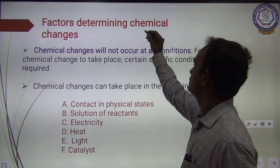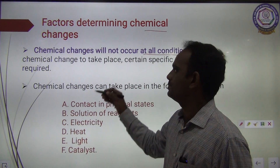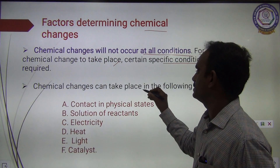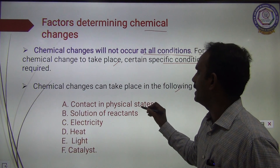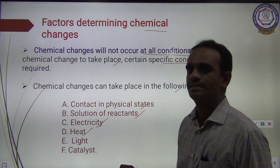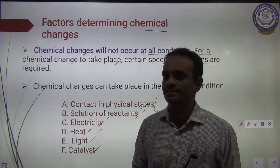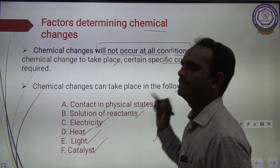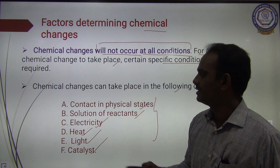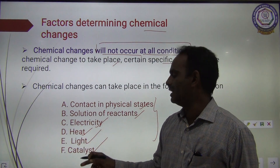Factors determining chemical changes. Chemical changes will not occur at all conditions. For a chemical change to take place, certain specific conditions are required. Chemical changes can take place under the following conditions: contact in physical state, solution of reactants, electricity, heat, light, and catalyst.